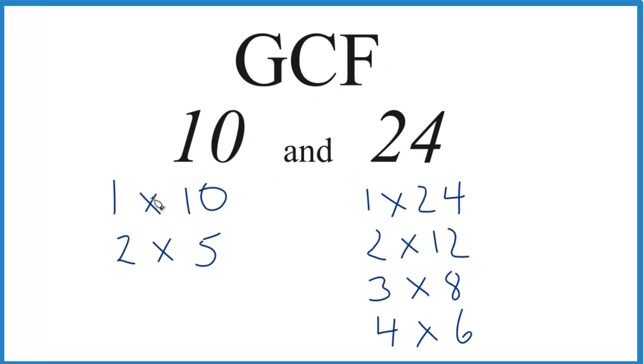Now we have the factors for 10 and 24. We find the common factors: 1 is common, so 1 goes into 10 and 24. 2 - that goes into 10 and 24. But those are the only factors that are common, and 2 is the greatest number here.